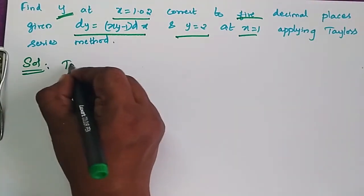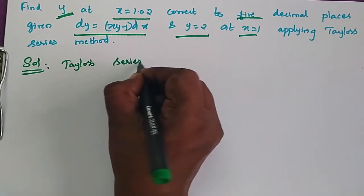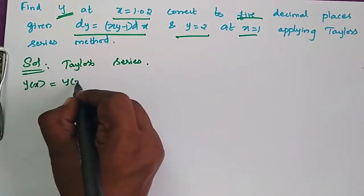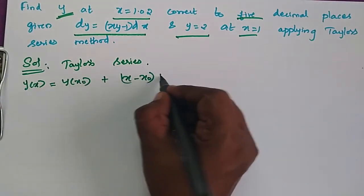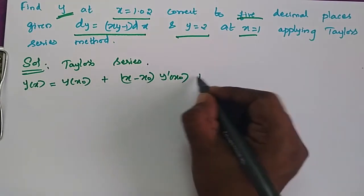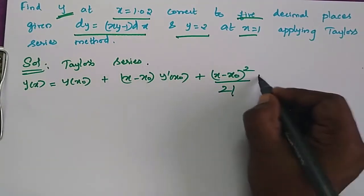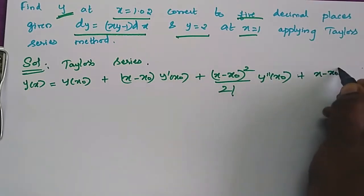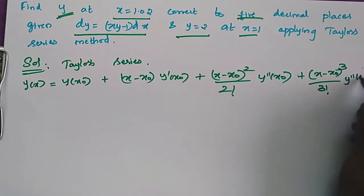Solution using Taylor's series: y(x) is equal to y(x₀) plus (x minus x₀) into y'(x₀) plus (x minus x₀)² by 2 factorial into y''(x₀) plus (x minus x₀)³ by 3 factorial into y'''(x₀).